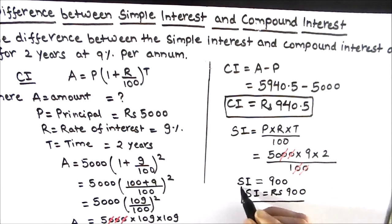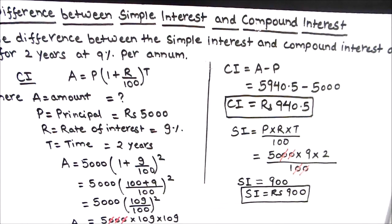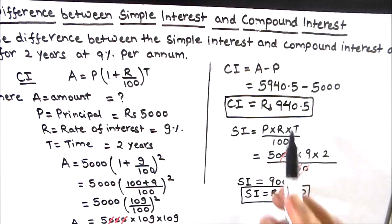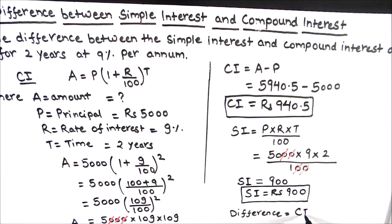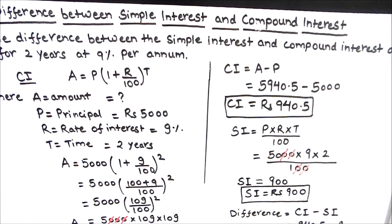So we got the value of compound interest and simple interest. Now we will find the difference: compound interest minus simple interest equals 940.50 minus 900, which is equal to rupees 40.50. This is our final answer.